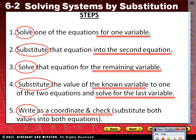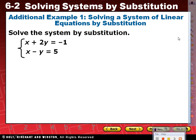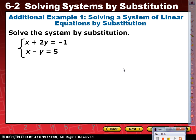Let's write example one. Solve the system by substitution. The system is: x plus 2y equals negative one, and x minus y equals five. In the previous lesson, we solved systems by graphing, and the solution was where both lines intersected — that one point. So what that's telling us is that at the end, our solution has to be a coordinate.